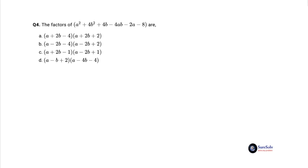For option b, a minus 2b minus 4 multiplied by a minus 2b plus 2. For option c, a plus 2b minus 1 multiplied by a minus 2b plus 1. And for option d, a minus b plus 2 multiplied by a minus 4b minus 4. At first the problem seems to be difficult. But as a habit we examine the target expression more closely to find a few terms which are related together. We might be able to use the pattern for a solution. That's the idea.